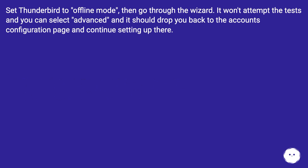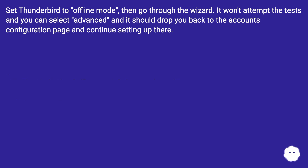Set Thunderbird to offline mode, then go through the wizard. It won't attempt the tests and you can select Advanced, and it should drop you back to the accounts configuration page and continue setting up there.